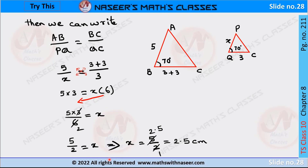We cancel 2 ones are 2, 2 2.5s are 5. So we get x is equal to 2.5 cm.